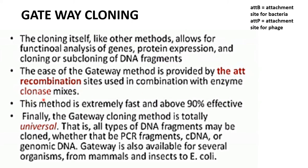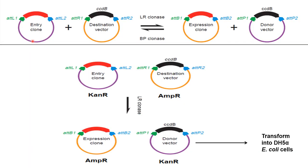The ease of the Gateway method is provided by att recombination sites used in combination with the enzyme Clonase mixture. This method is extremely fast and about 90 percent effective. The Gateway cloning method is totally universal — all types of DNA fragments may be cloned, whether PCR fragments, cDNA, or genomic DNA. Gateway is available for several organisms from mammals and insects to E. coli.